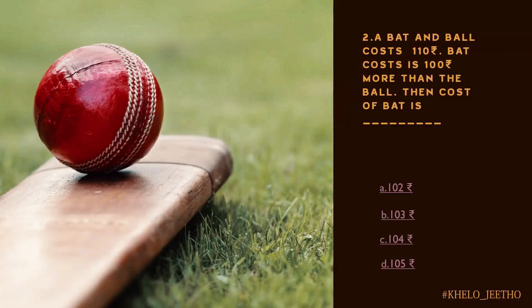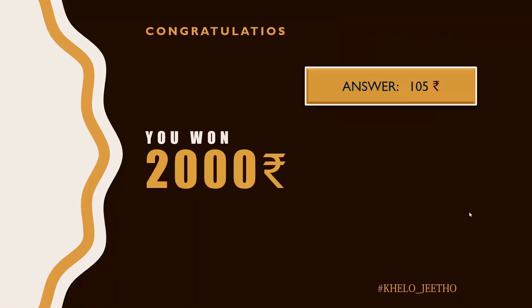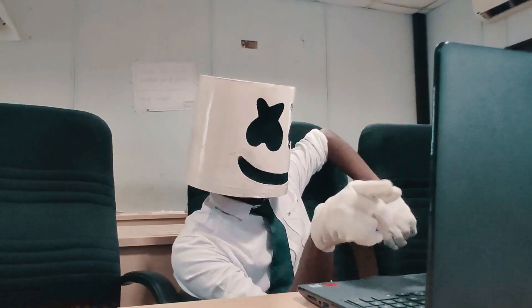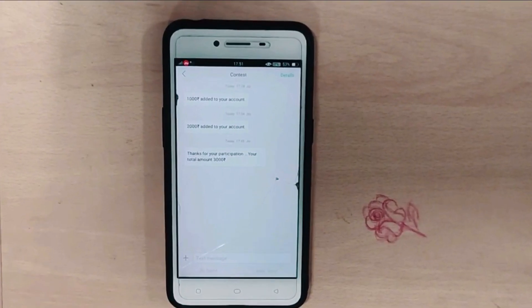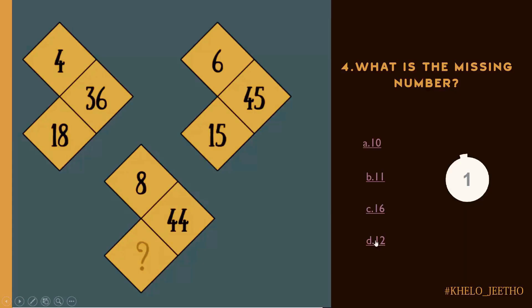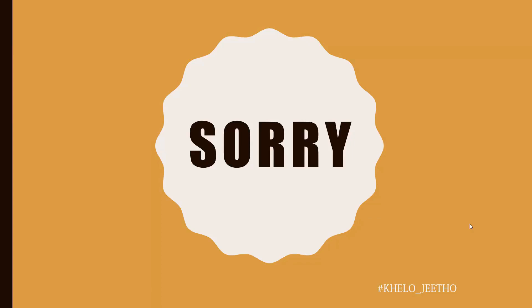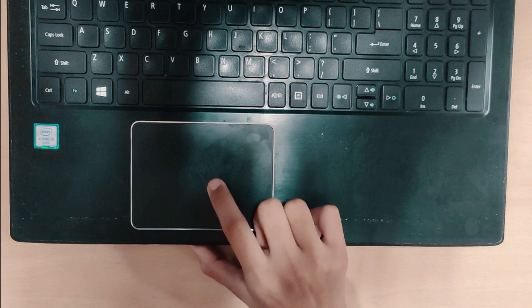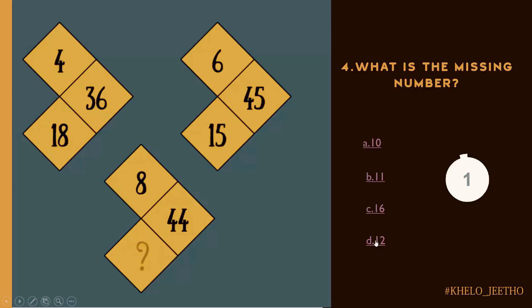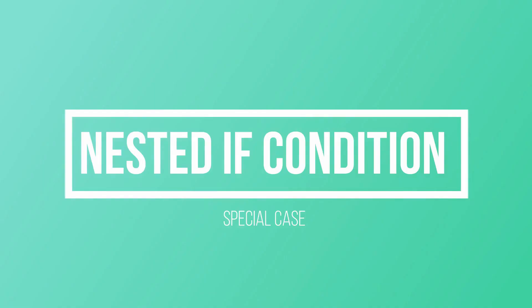For the second question, if the condition is satisfied, 2000 is added to their account plus they get a chance at the third question. If the third question is not answered correctly, the contest is out and there is no last question chance. If the answer is wrong, the condition is not satisfied. But if you have a correct answer, the condition is satisfied. If the last condition is not satisfied, the money is out.